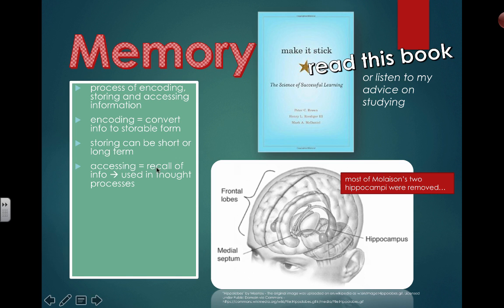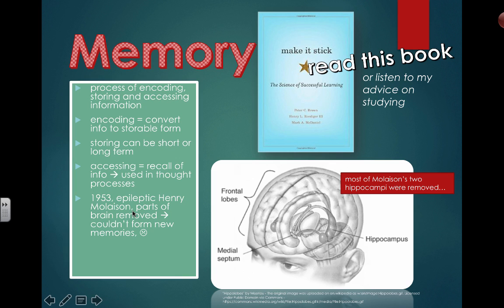Accessing is the process of recalling information — it's used in your thought processes. Back in the day, some crazy experiments were done on humans, and unfortunately or fortunately we learned a lot from them. Different types of treatments that would nowadays be considered unethical were used. For example, in 1953 an epileptic patient named Henry Molaison had parts of his hippocampus removed as a treatment for epilepsy. As a result, he couldn't form any new memories. What did we learn? The hippocampus plays a role in memory — so don't do things that mess this part up or you won't be successful in your exams.